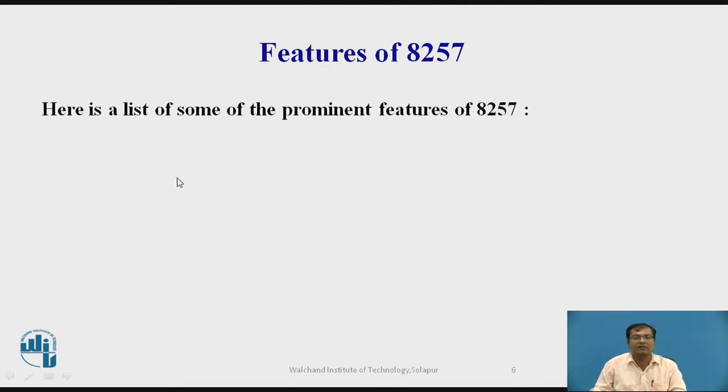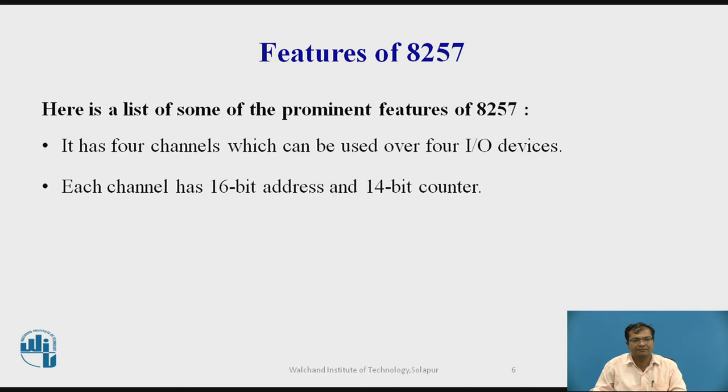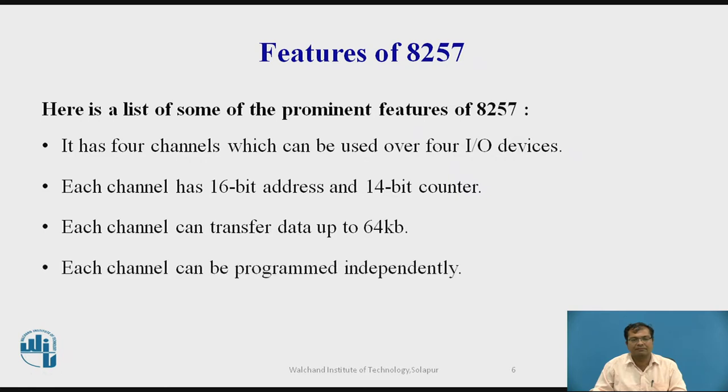Here we have a list of features of 8257. It is having four channels which can be used over four I/O devices. Each channel is having a 16-bit address register and 14-bit counter register. And each channel is having a capacity to transfer data up to 64 KB.